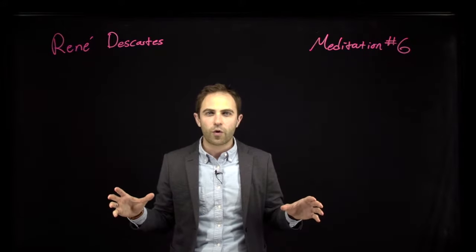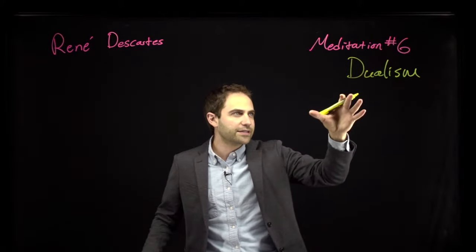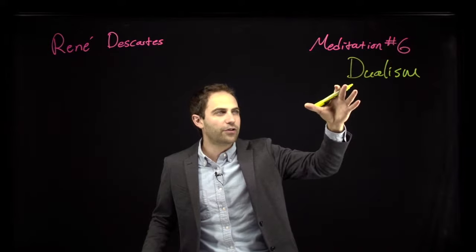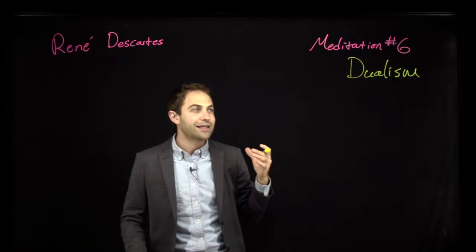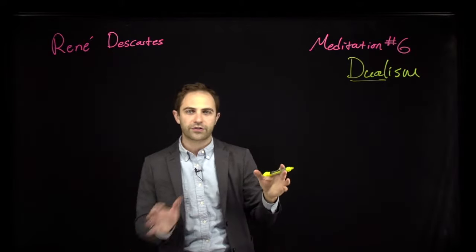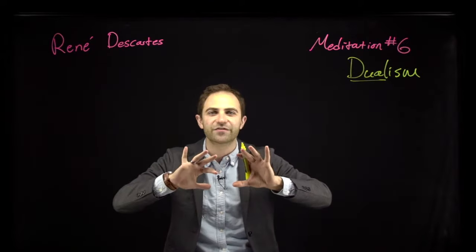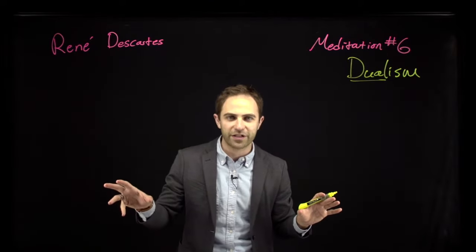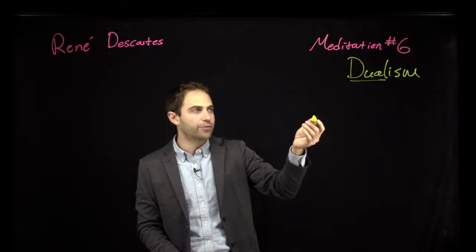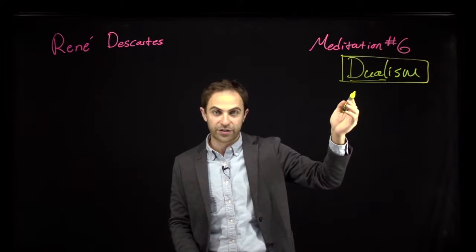Descartes is what we will call a dualist. Dualism is specifically, as we're using the term here, a theory about the nature of the human mind. The idea is that there are two things — dual — there's the mind and the body. And they're two separate kinds of stuff. There's the physical stuff and the mental stuff, and they're different. So we get two arguments for Descartes' version of dualism in Meditation 6.